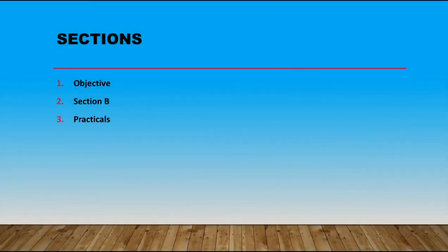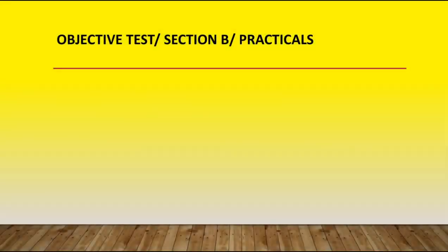WASSCE Integrated Science has three sections: the objectives, section B, and the practicals section. You are going to look at each of these sections and what's involved in every section. Before I start, maybe you are expecting topics. I will urge you to watch the video to the end because that is where I mention certain topics which are most likely to be seen in almost every year.